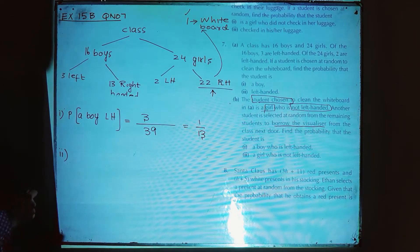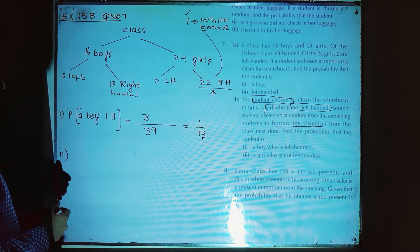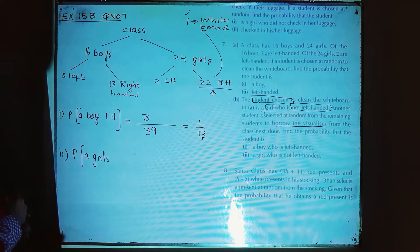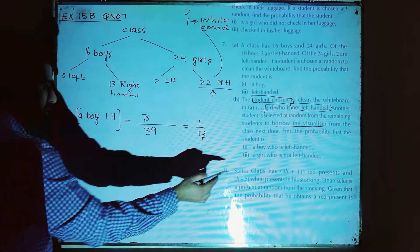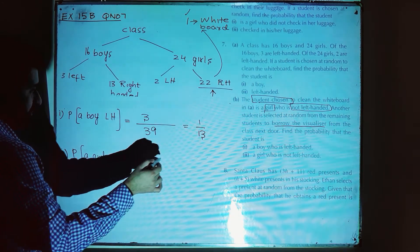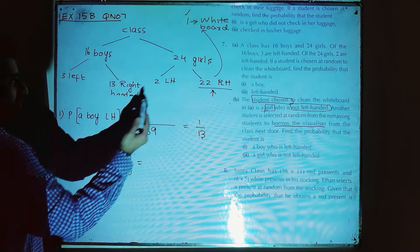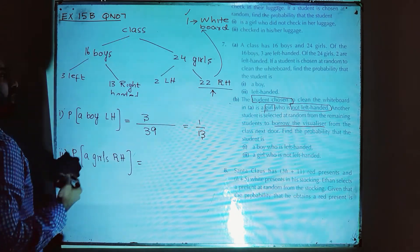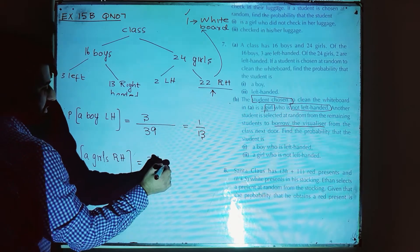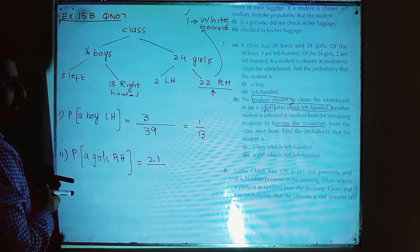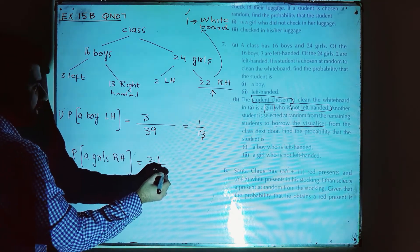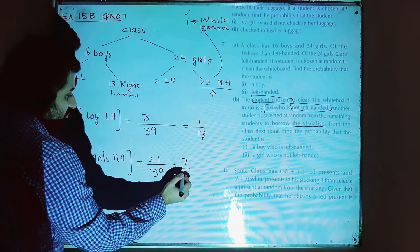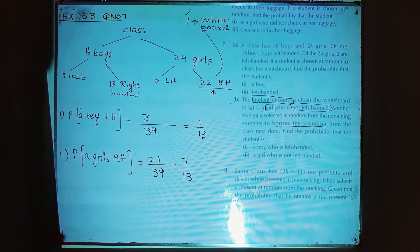Part 2: a girl who is not left-handed. We have to find the probability that the girl chosen to borrow the visualizer is not left-handed, meaning right-handed. We have 22 right-handed girls, but one right-handed girl is already on whiteboard duty, so we have 21 girls to choose from. The total number of remaining students is 39. So the probability is 21 over 39.